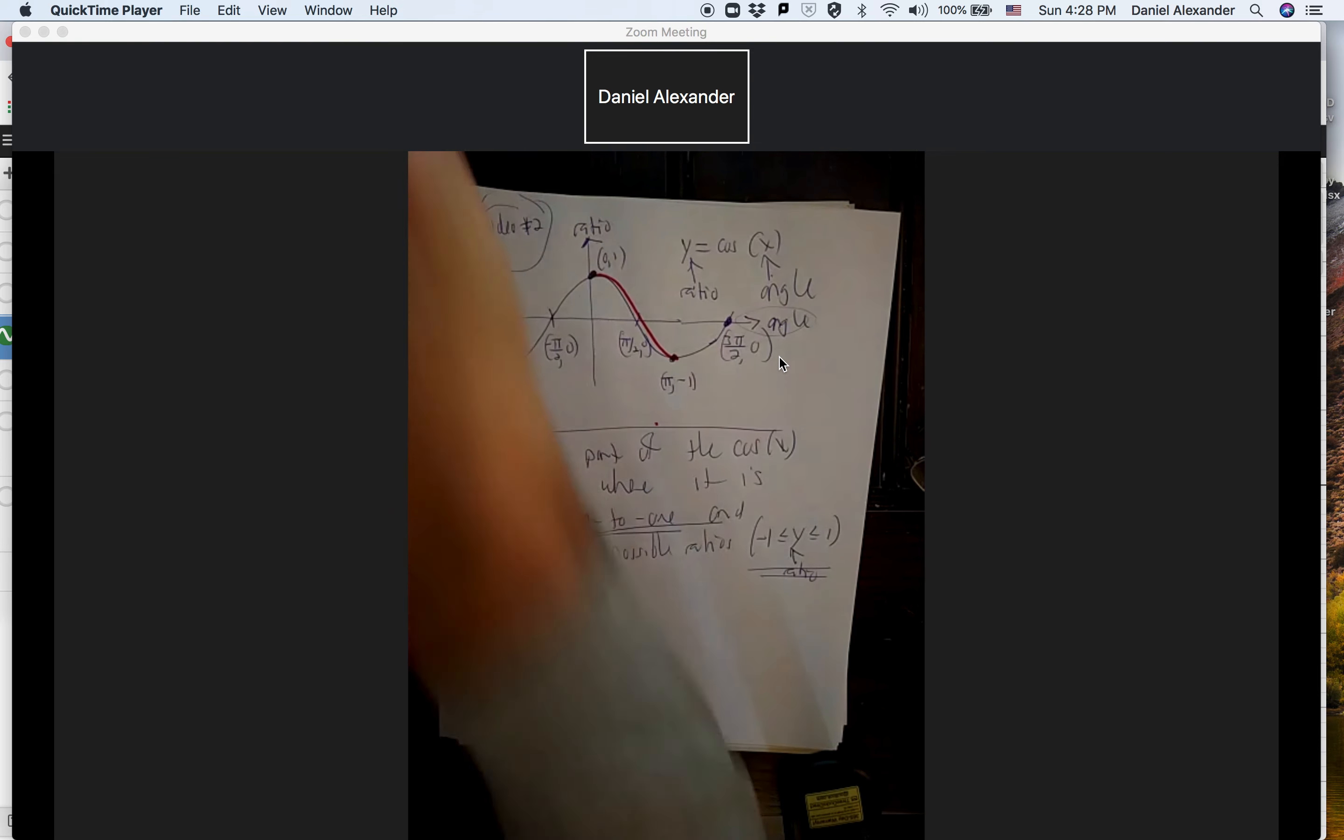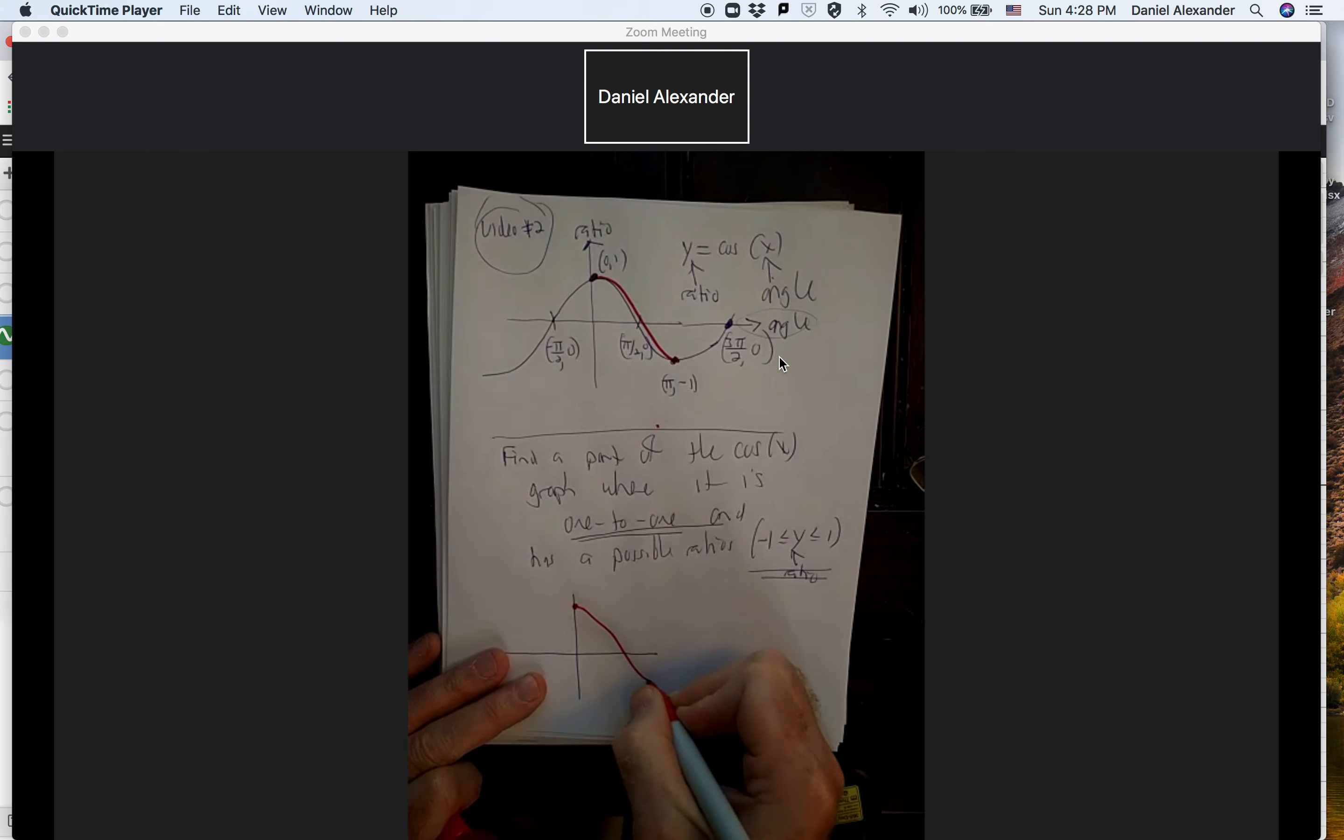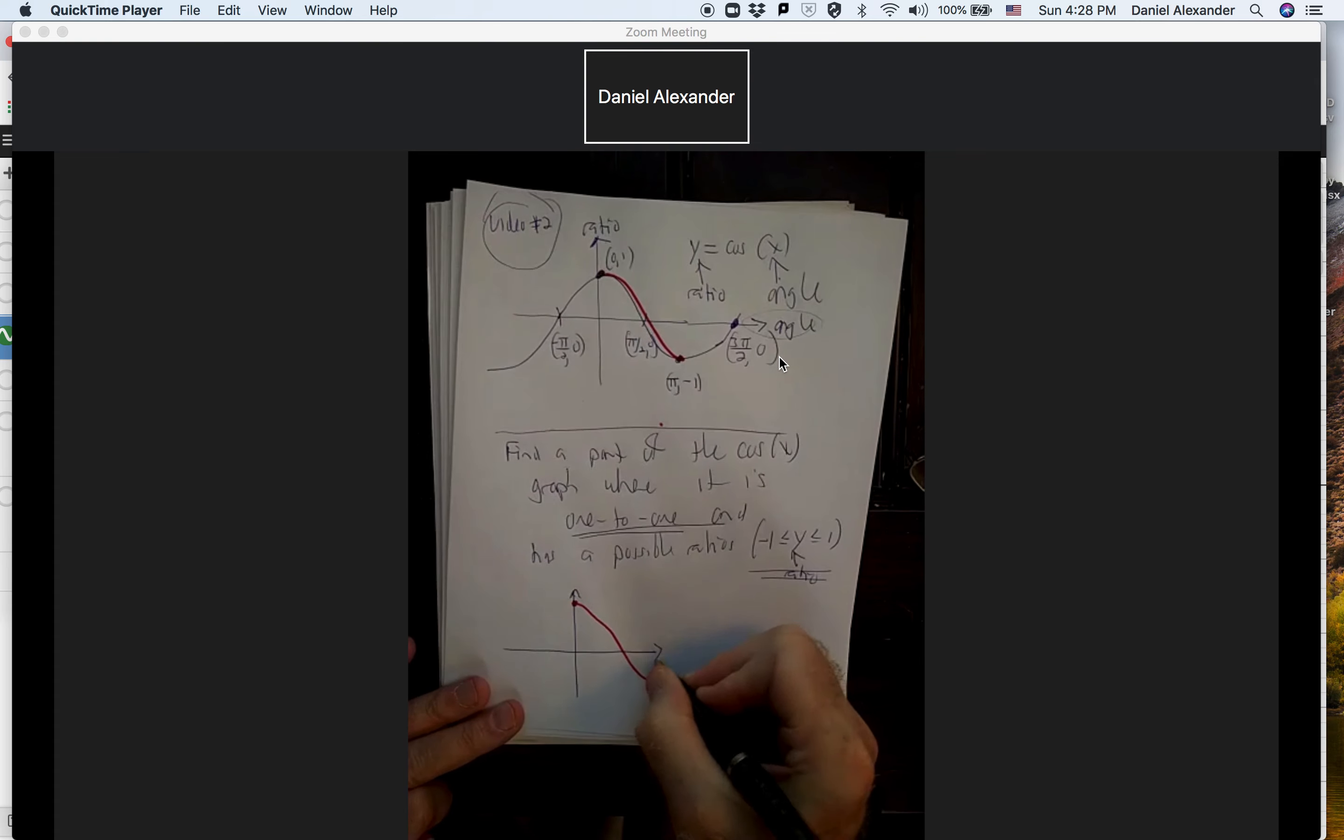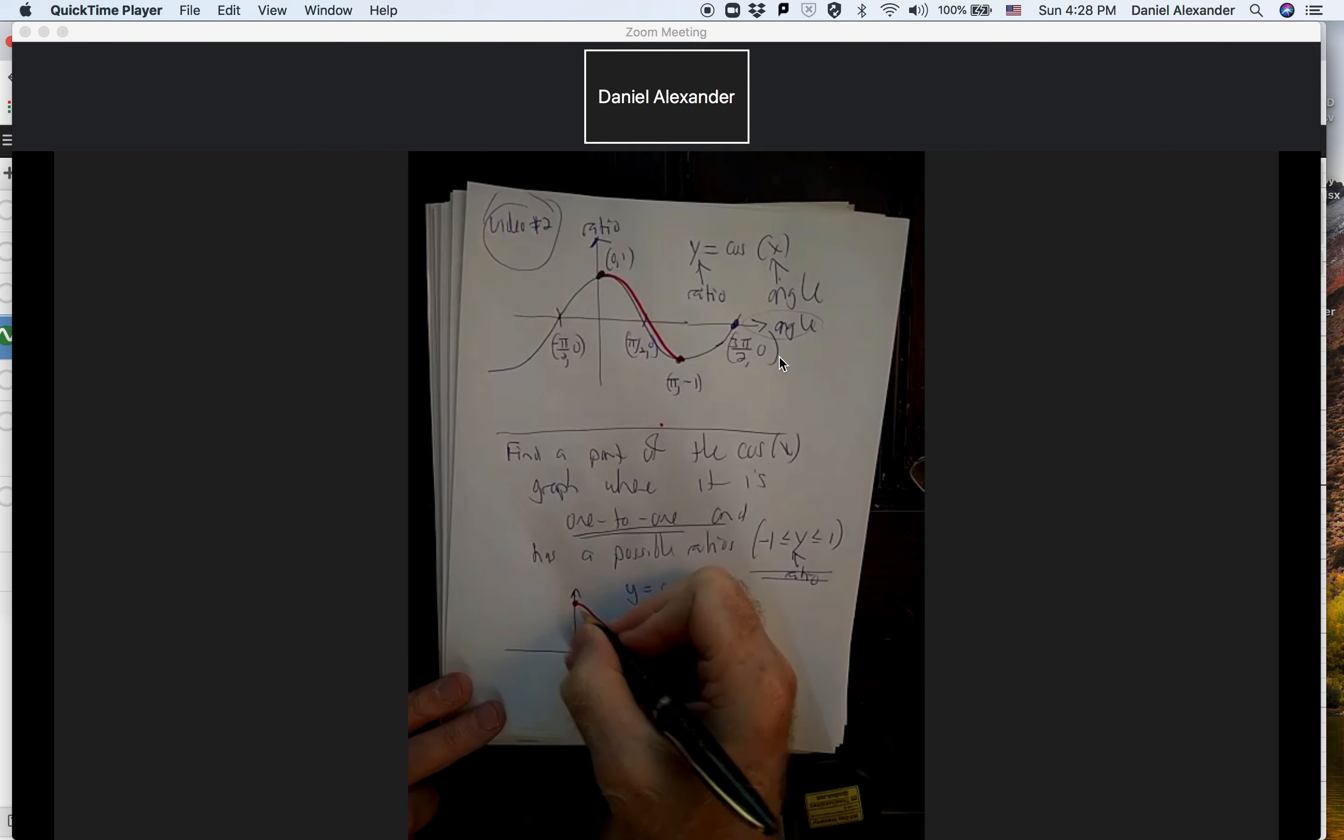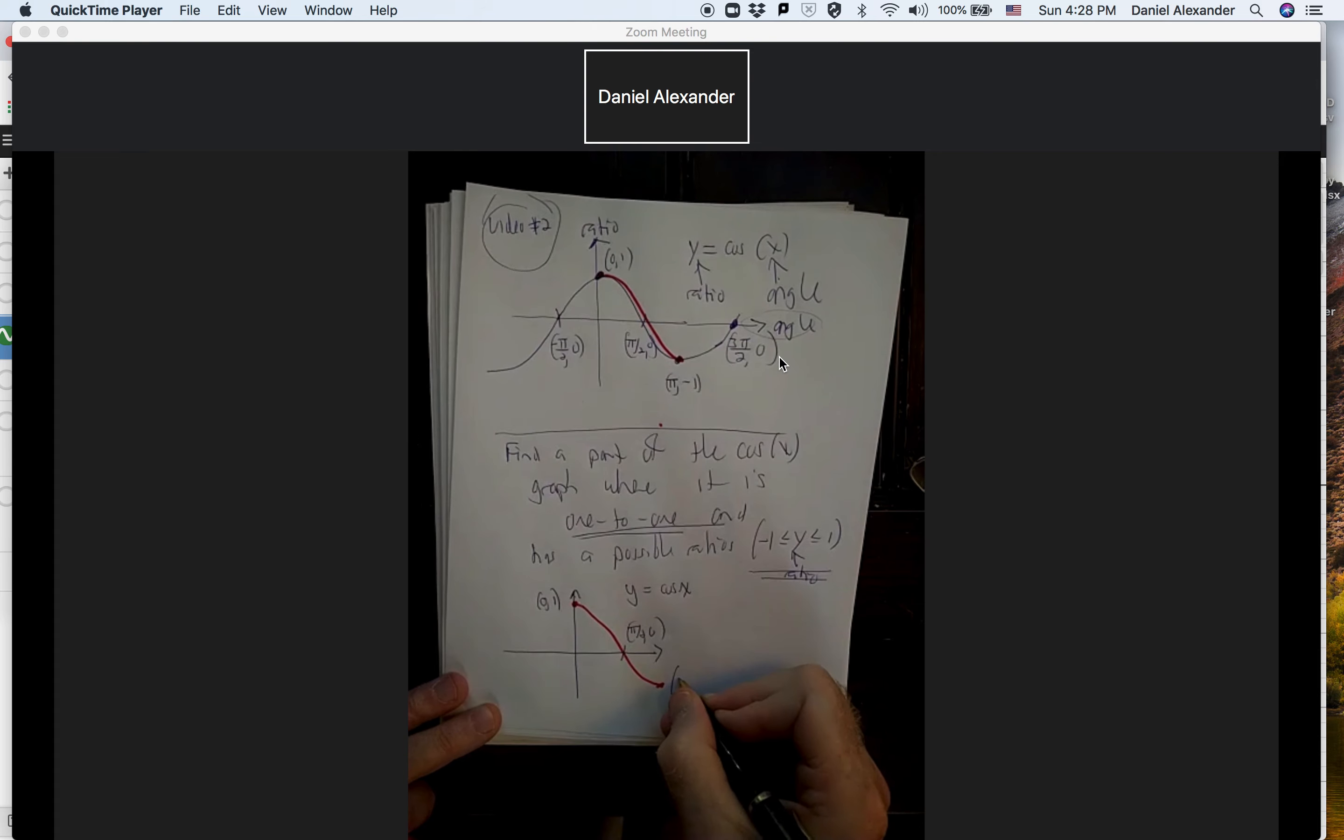So in other words, I'm going to have this. I'm just going to look at this part of the graph between here and here. And then, so this point here, angle is zero, cosine ratio is one. Here the angle is pi over two, cosine ratio is zero. Here the angle is pi, the cosine ratio is minus one.